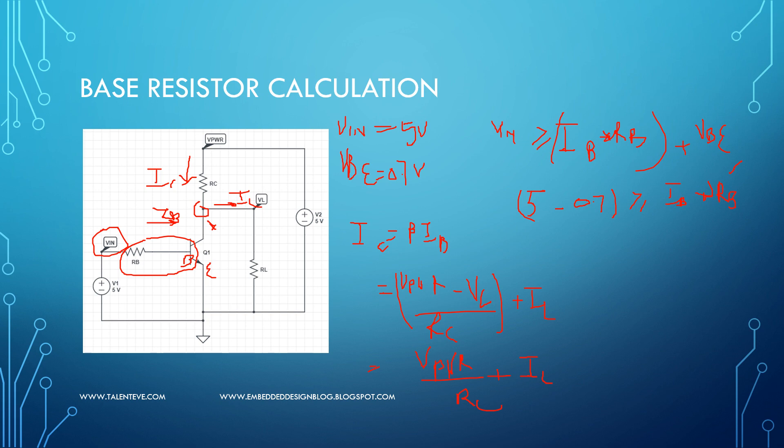IB is equal to IC by beta, right. So substitute this here, so the 5 minus 4.7 is nothing but 4.3. 4.3 is greater than or equal to IC is calculated from here, so IC is equal to V power, we know it is 5 volts.